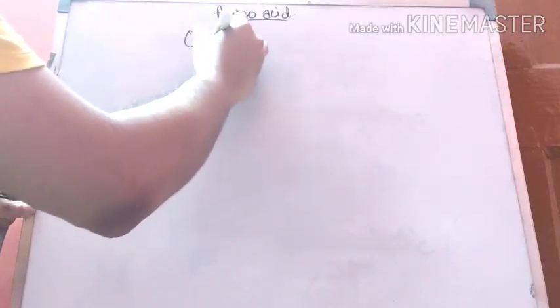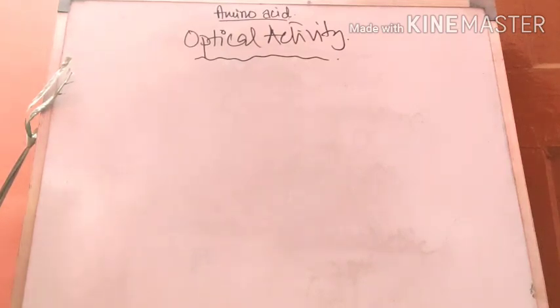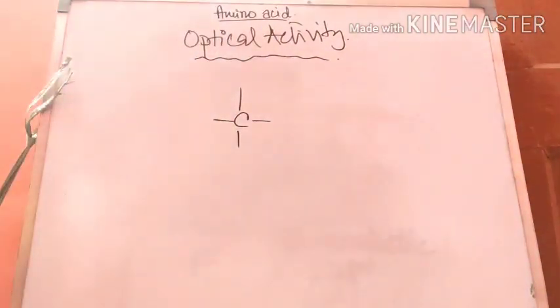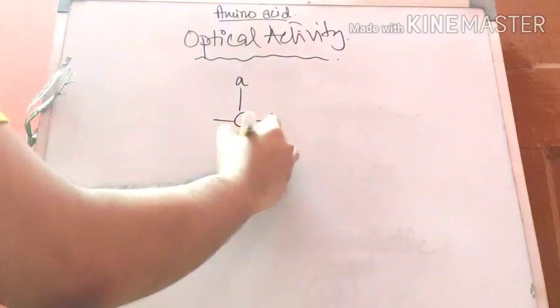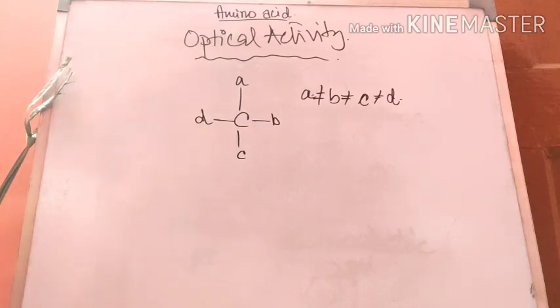Next, we will talk about the optical activity of an amino acid. What is optical activity? In order to perform optical activity, the compound must have a chiral carbon. What is a chiral carbon? As you remember from high school chemistry, a chiral carbon is one where the four bonds of the carbon contain different groups — A ≠ B ≠ C ≠ D. This type of carbon is known as a chiral carbon, and it can rotate the plane of polarized light.